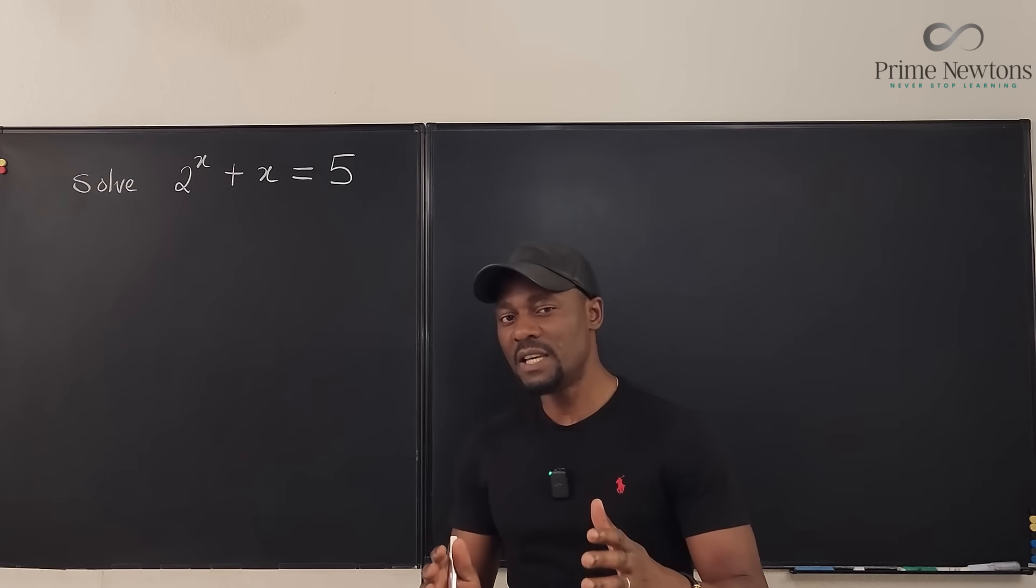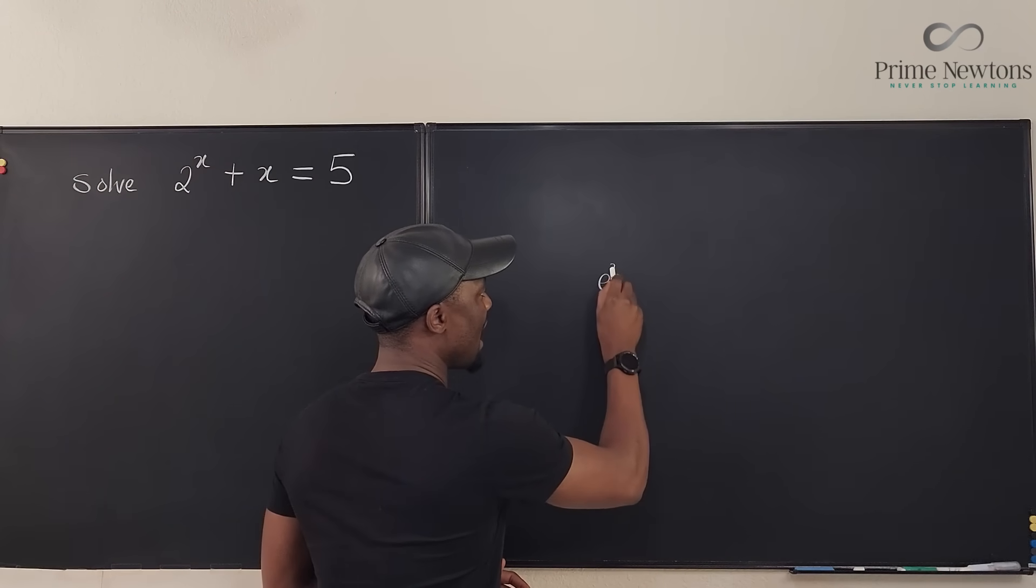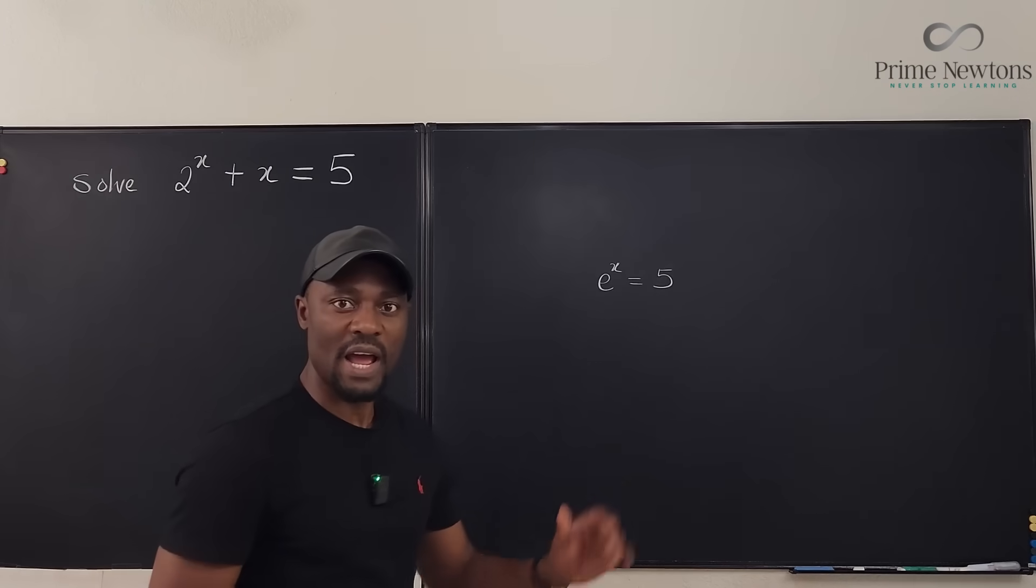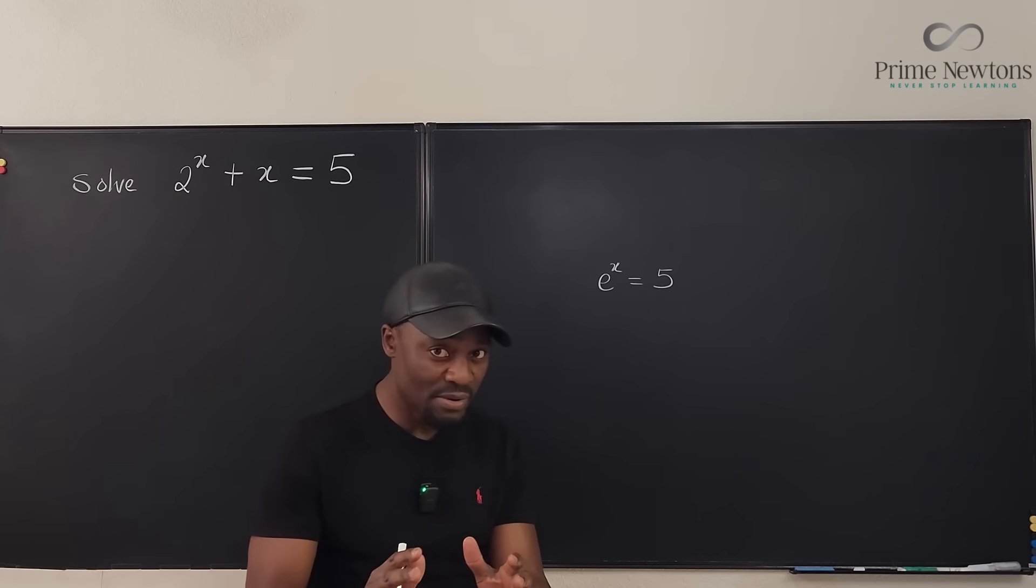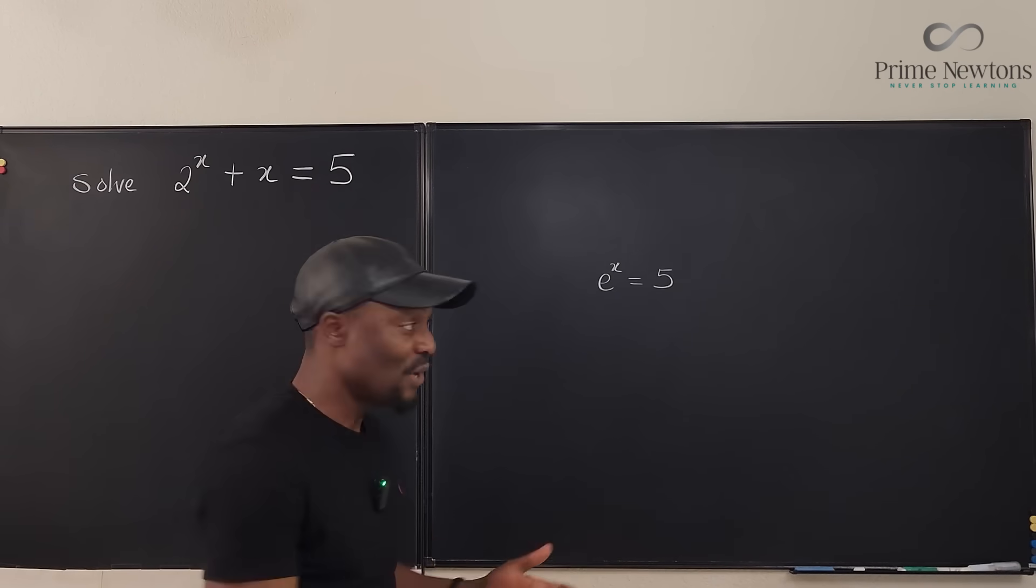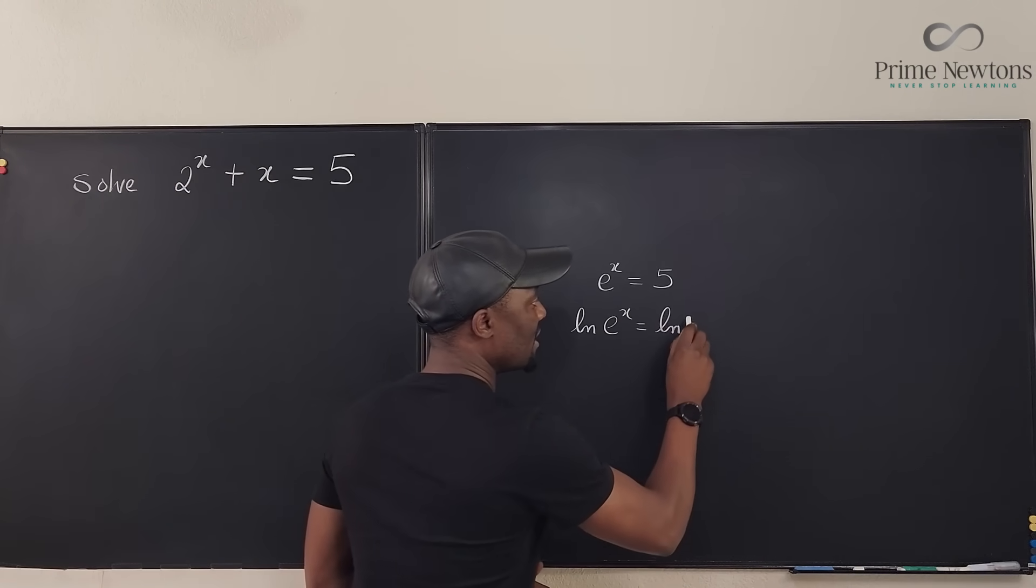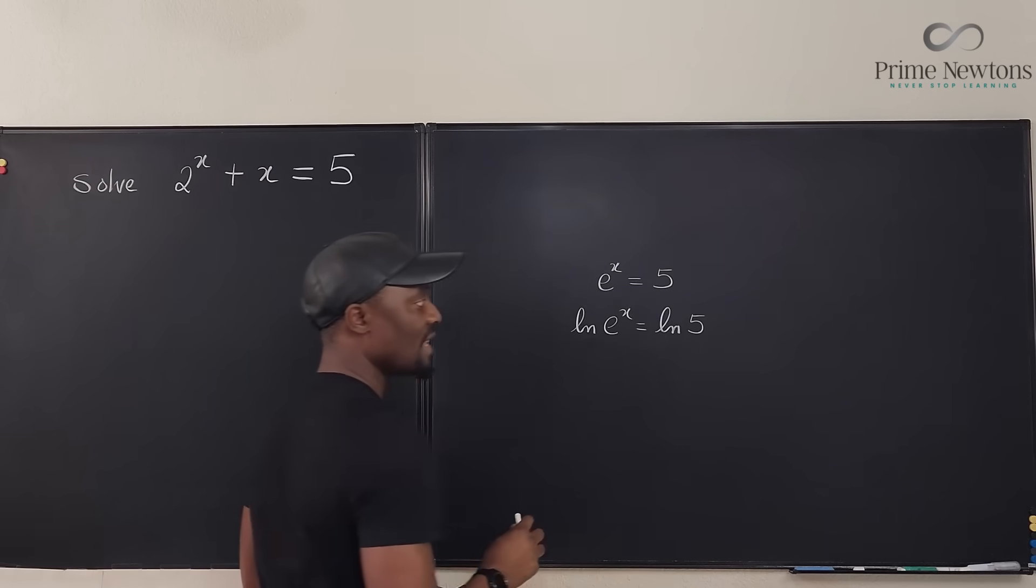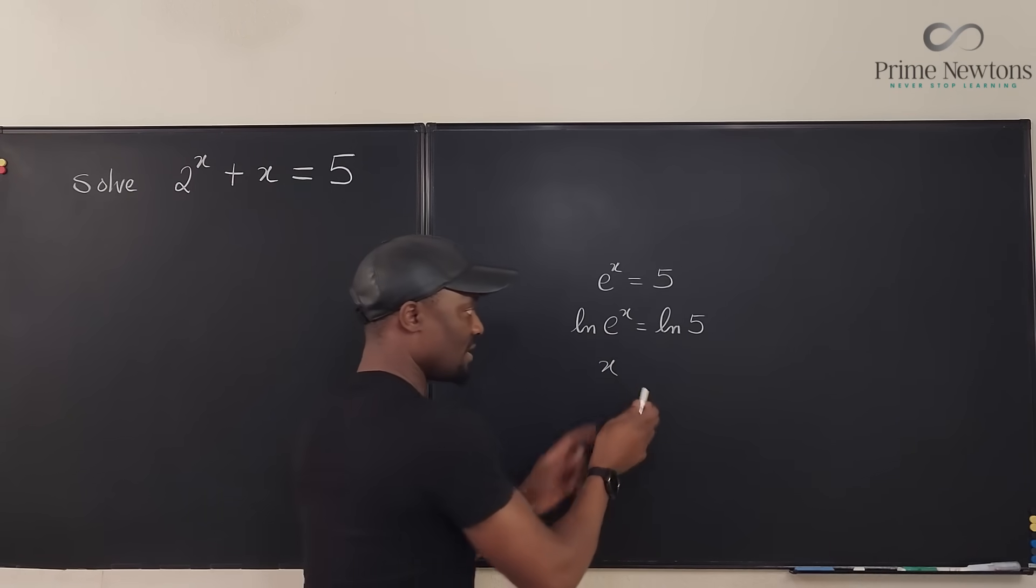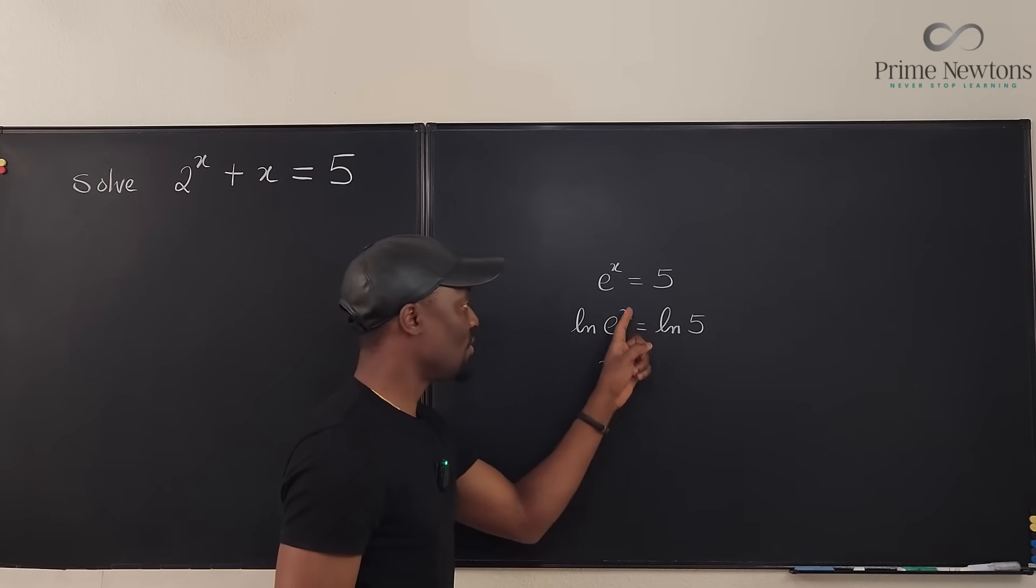Let me give you a good idea of what I'm talking about. If I told you that e^x = 5, remember that you can solve this yourself by taking the natural log of both sides. So you can say that ln(e^x) = ln(5).